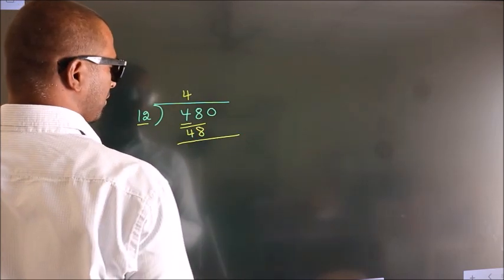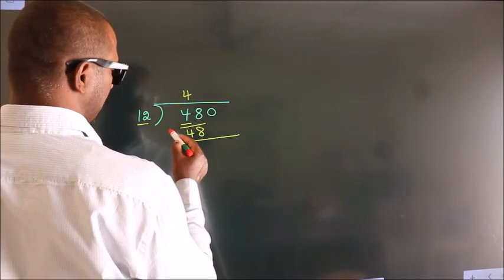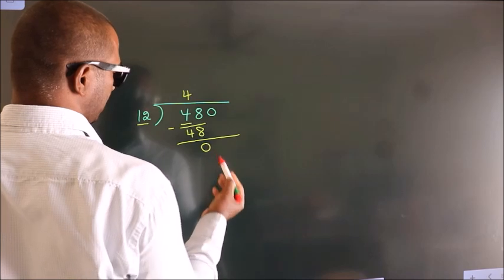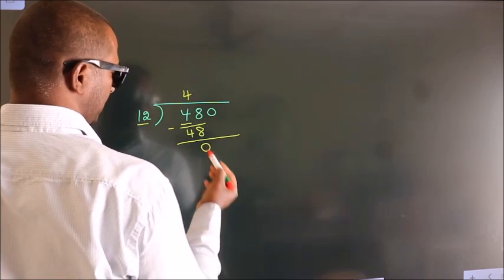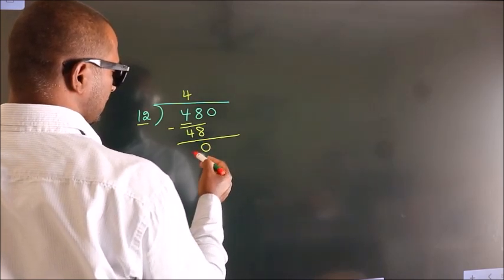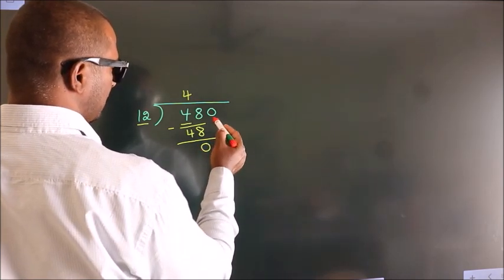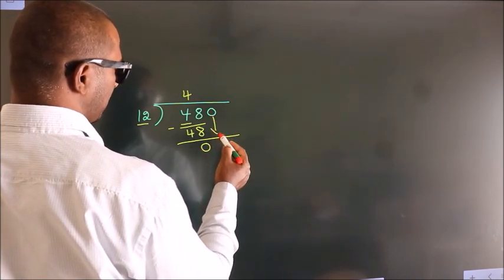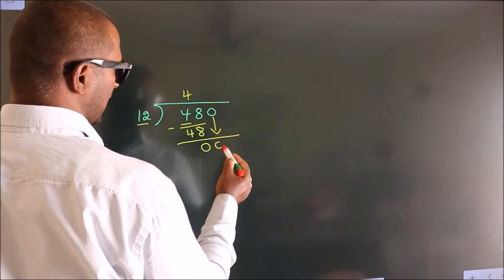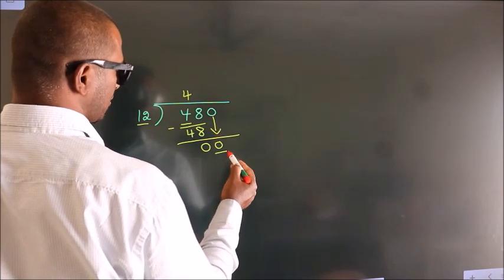Now we should subtract. We get 0. After this, bring down the beside number. So 0 down, so 0.